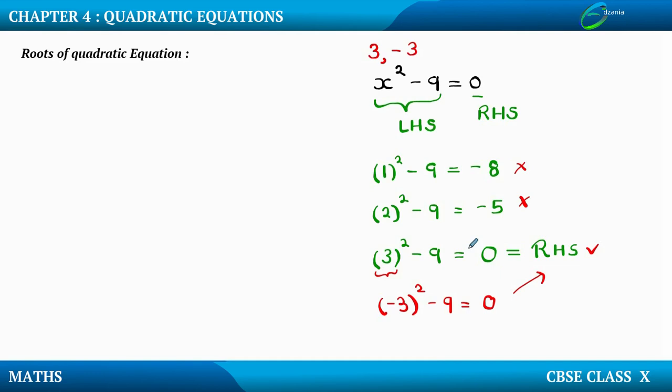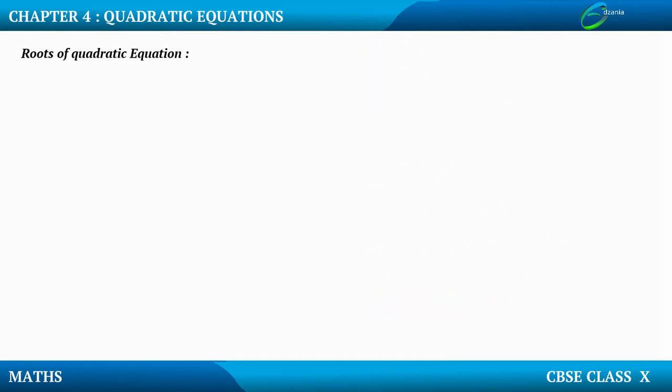Now what you are supposed to remember is every quadratic equation has 2 roots. Why it has 2 roots? Because the degree of the variable is 2.